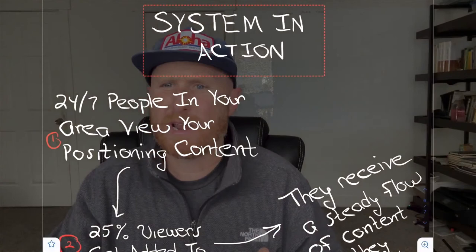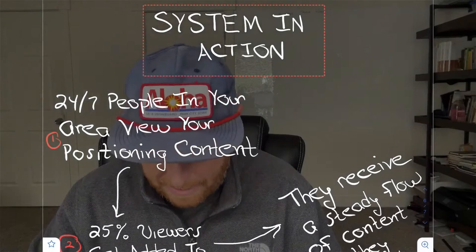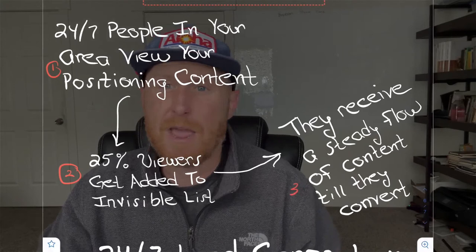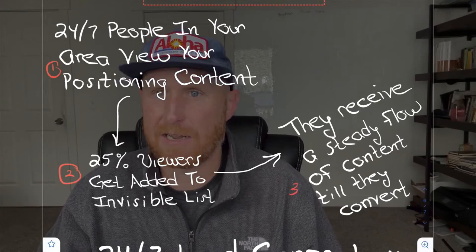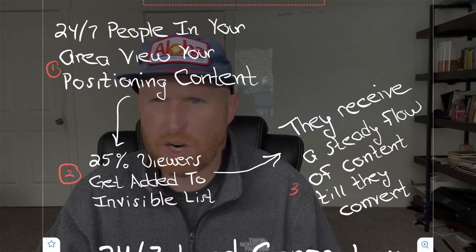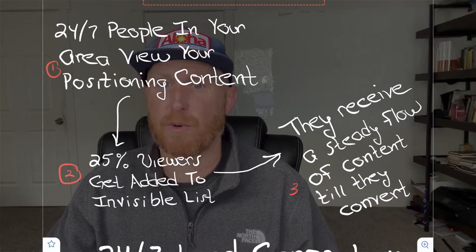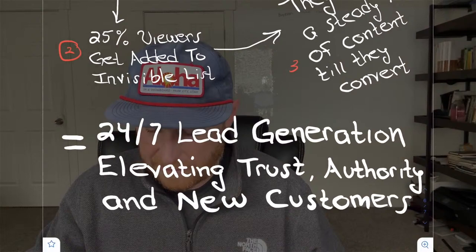Just to recap the system in action: 24-7, people are viewing your authority positioning content that establishes you as an authority in the market. We take people that watch 25% of those 3-5 minute videos and start feeding them all the content you're probably already making — but the right people just aren't seeing it. This expands your audience and your authority. These campaigns can be run for as little as $5 a day, making it an excellent system for every local service provider or local business, whether you go to their house or they come to your place. Done right, this is a 24-7 lead generation machine elevating your trust, authority, and new customers.